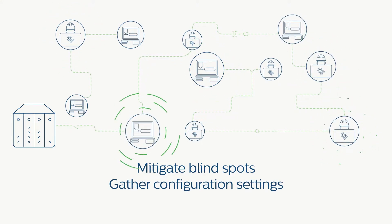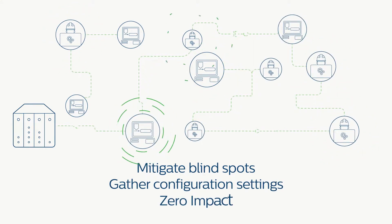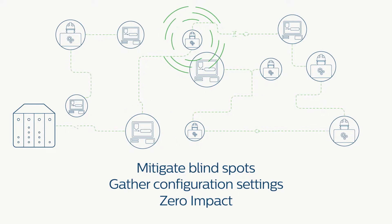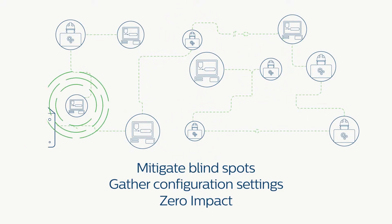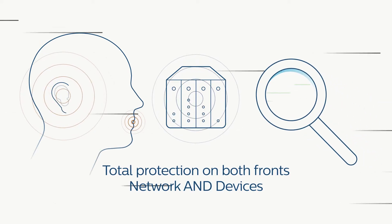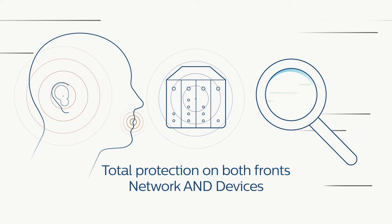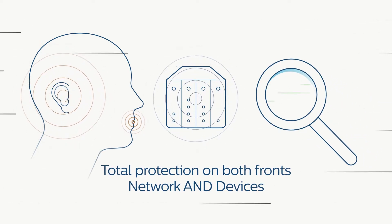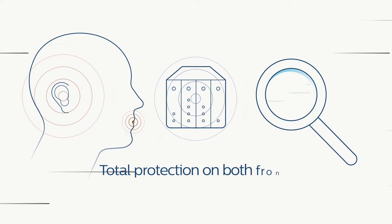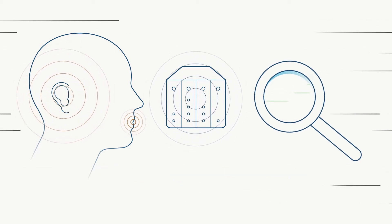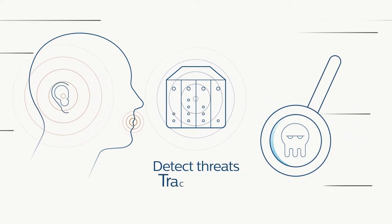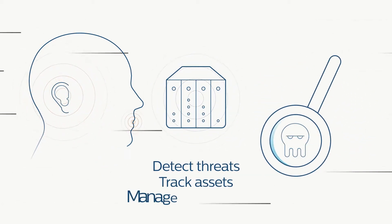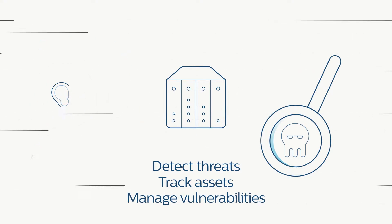It guarantees efficient communication with no impact on your industrial controllers or entire network. IndiG's device integrity augments passive monitoring with querying to provide the truest and most comprehensive ICS protection, including threat detection, asset tracking, and vulnerability management.